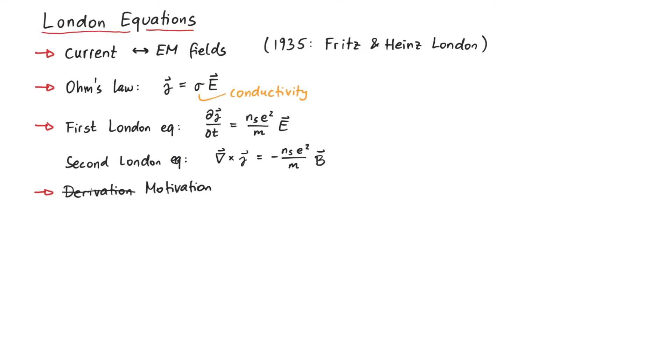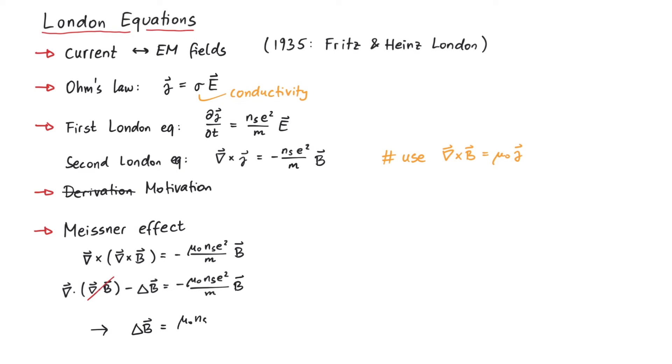A big achievement of the London equations is that they predict the Meissner effect, which describes the expulsion of a magnetic field from the inside of a superconductor. To see how this works, we take the second London equation and substitute the current using one of Maxwell's equations. Now we have the curl of the curl of the magnetic field being proportional to the magnetic field itself. Since the divergence of B is zero, we can simplify the left-hand side and arrive at the second derivative of B being proportional to B.